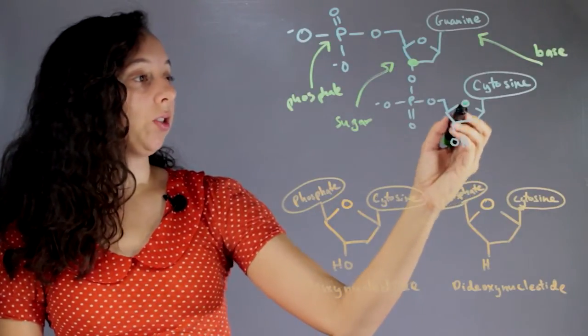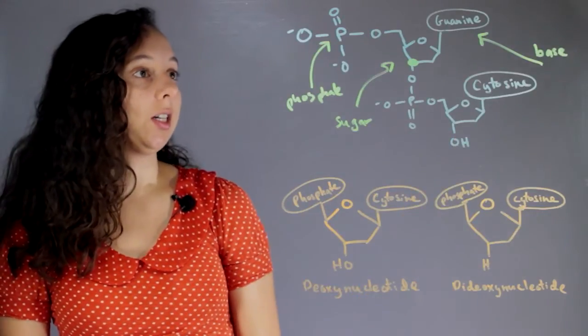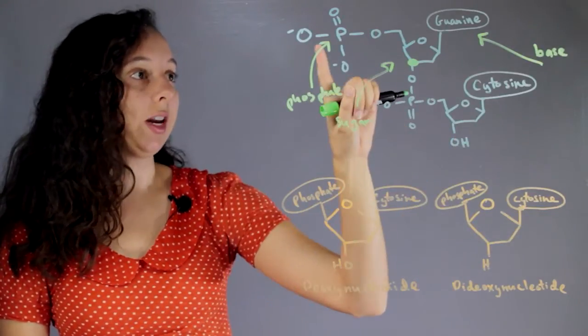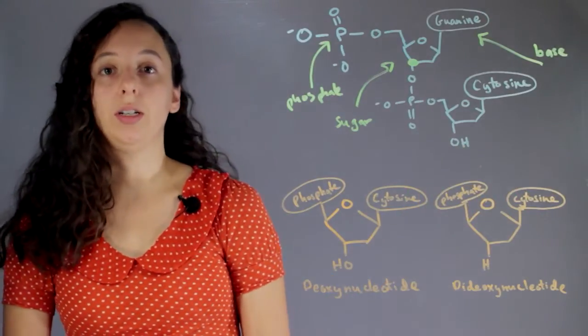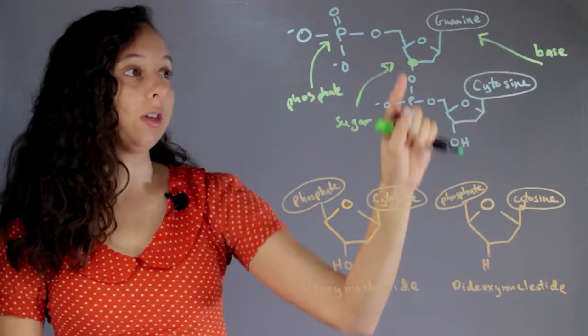Right now this sugar has an alcohol group hanging off of it, and it's ready to connect with another phosphate. Remember that DNA and RNA both connect through this linkage.